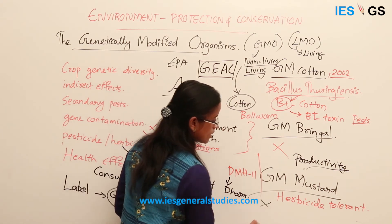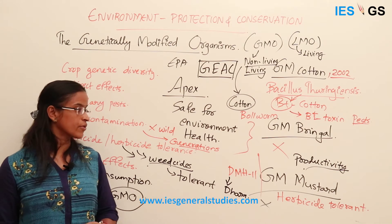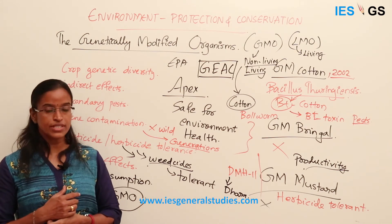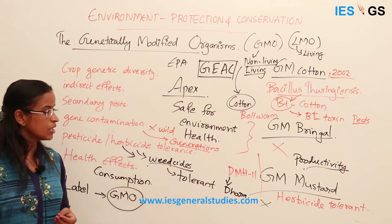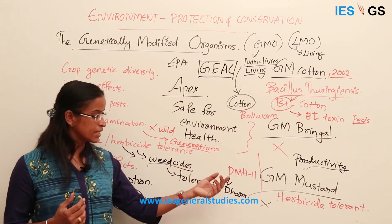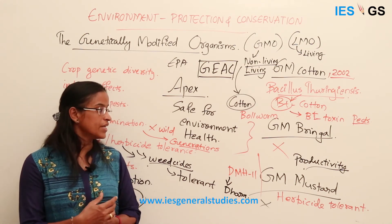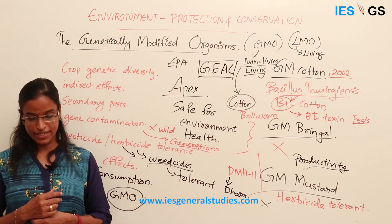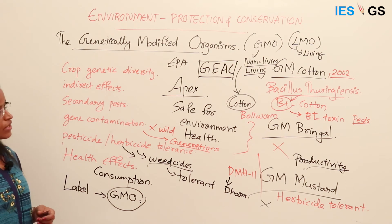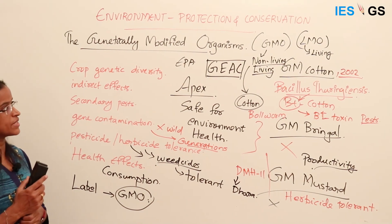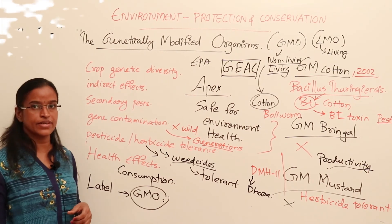The Genetic Engineering Appraisal Committee cleared GM Mustard for environmental release, but again the government has not allowed its release. The Supreme Court also ruled against the release of GM Mustard due to concerns about illegal use of herbicides when it is cultivated. At present, only GM Cotton is allowed for commercial release and cultivation in India; other GM crops are not yet permitted.